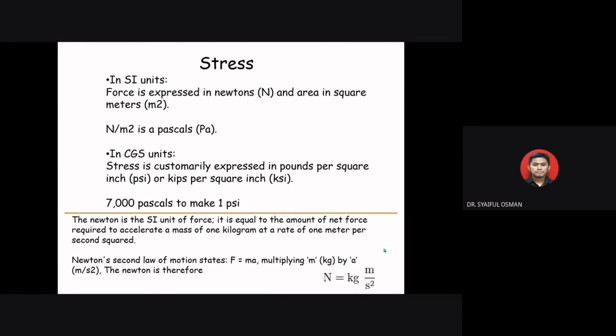The unit of stress in SI units is newton per square meter (N/m²), also equivalent to pascal (Pa). In US customary units, stress is expressed in pounds per square inch (psi) or kips per square inch (ksi). Note: 6,895 pascals equals one psi.